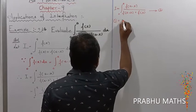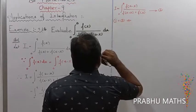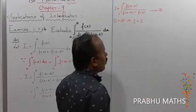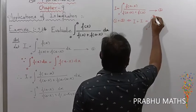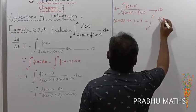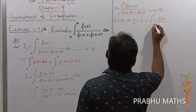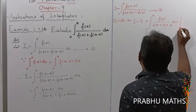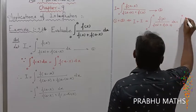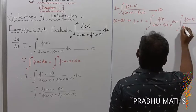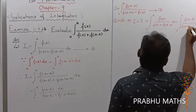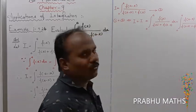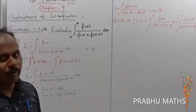Now equation number 1 plus equation number 2, which implies the left side is i plus i. That is equal to integral from 0 to a of f(x) divided by [f(x) plus f(a minus x)] dx, plus integral from 0 to a of f(a minus x) divided by [f(a minus x) plus f(x)] dx. The limits and dx are common to both integrals.